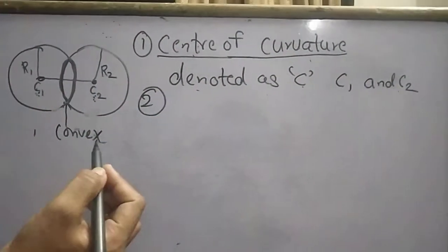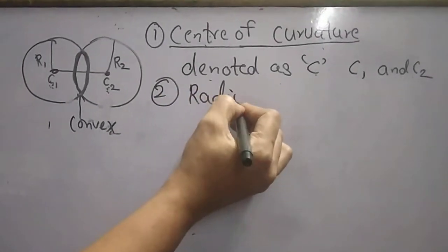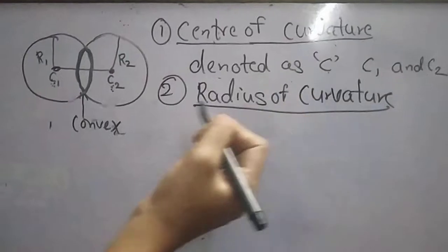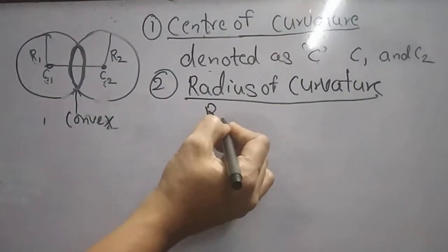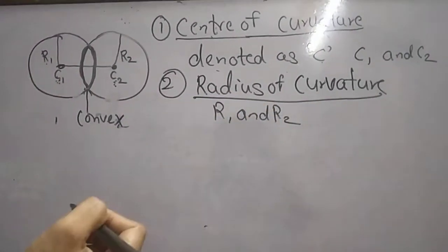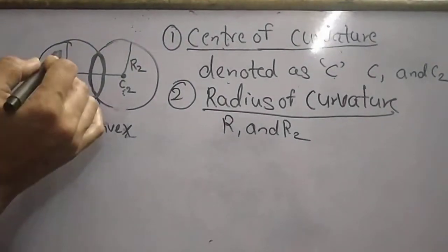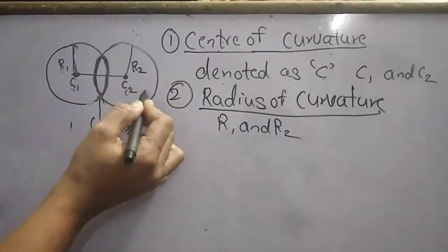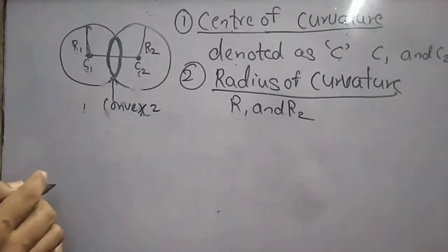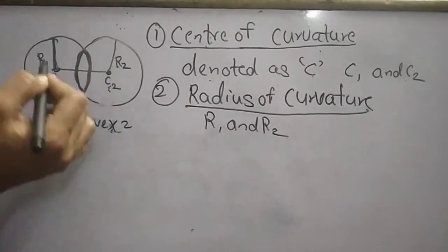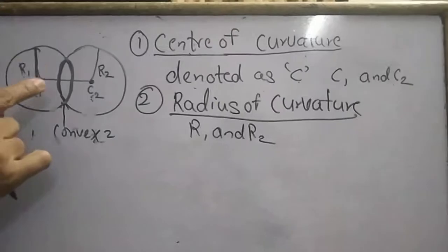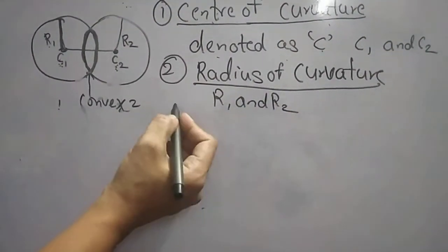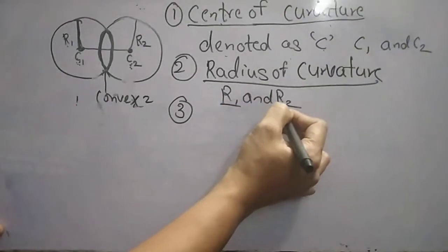The second definition is the radius of curvature. R1 and R2 are the radii of curvature. The radius of curvature is defined as the radius of the sphere whose part forms the surface of the lens. R1 is the radius of one sphere and R2 is the radius of the other. This is denoted as capital R1 and capital R2.